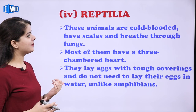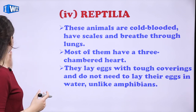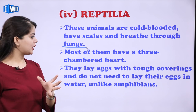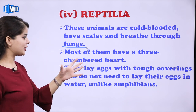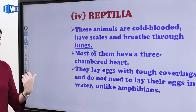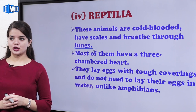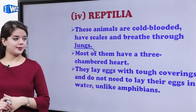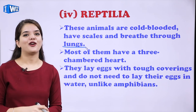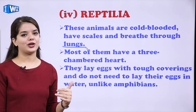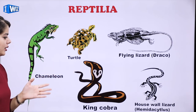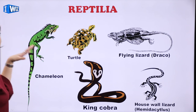Then we have Reptilia. These animals are cold-blooded, have scales, and breathe through lungs. Most of them have a three-chambered heart. They lay eggs with tough coverings and they do not need to lay their eggs in water, unlike amphibians. Examples of Reptilia include lizard, chameleon, turtle, flying lizard, house-wall lizard, king cobra, and snakes.